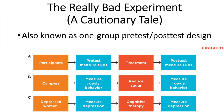For our second example, Dr. Yuki has recruited a sample of 40 depressed women, all of whom are interested in receiving psychotherapy to treat their depression. She measures their levels of depression using a standard depression inventory at the start of therapy. For 12 weeks, all the women participate in Dr. Yuki's style of cognitive therapy. At the end of the 12-week session, she measures the women again and finds that, on the whole, their levels of depression have significantly decreased.